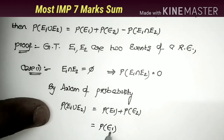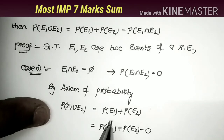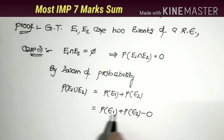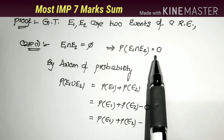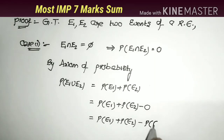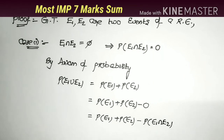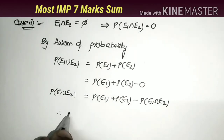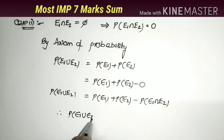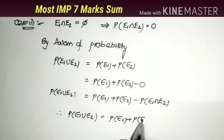In the next step, I apply minus 0 to this value: P(E1 ∪ E2) = P(E1) + P(E2) - 0. Now, since 0 = P(E1 ∩ E2), I replace 0 with P(E1 ∩ E2). Therefore, P(E1 ∪ E2) = P(E1) + P(E2) - P(E1 ∩ E2). This completes the first case of the addition theorem.